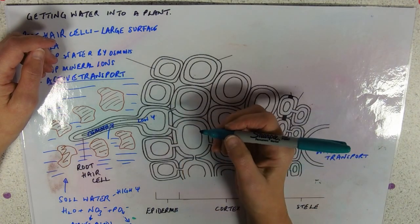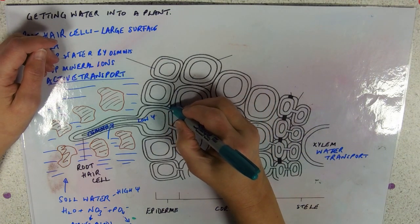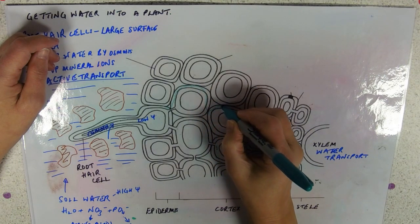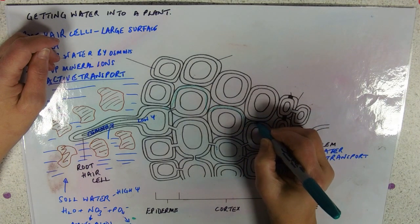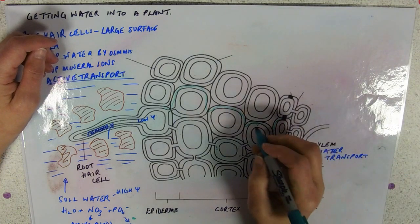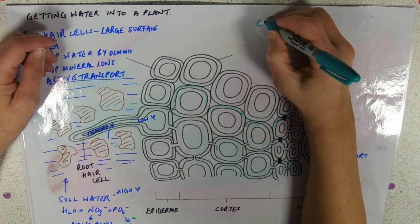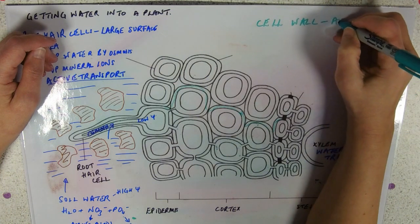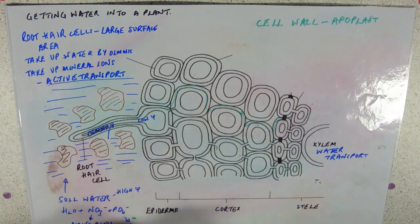So the cell wall is kind of like cotton wool, so it can just soak up. The water will be moving across from root hair through the cell wall. And we call that the apoplast pathway. Now that is the easiest route, the line of least resistance for water.